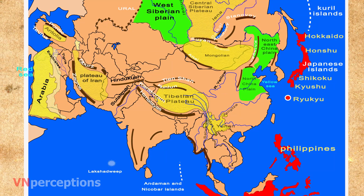Then we have some important deserts. The first is the Gobi Desert, the largest desert of Asia. Then we have the Taklamakan Desert, the largest desert of China. The Thar Desert is shared by both India and Pakistan. And the Syrian Desert.